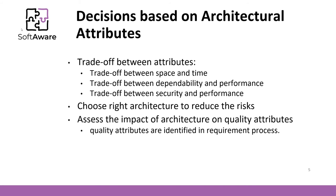As you can see, there are many ifs. What makes the decision even more complicated is that some of these attributes contradict each other. For example, increasing system security will reduce performance because of the communication overhead between additional layers added for security reasons. Architects have to choose a trade-off between space and time, dependability and performance, security and performance, and others.